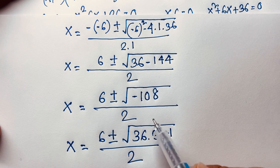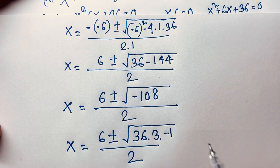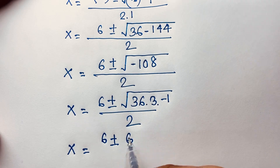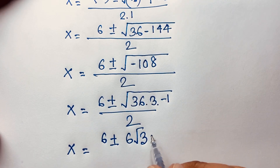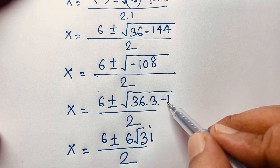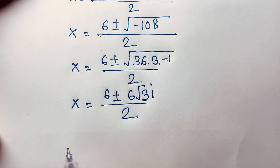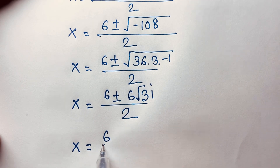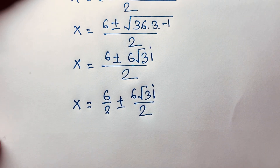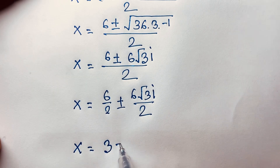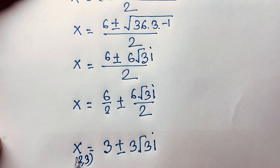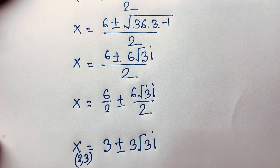Simplifying √(-108) = √(36 × 3 × (-1)) = 6√3 · i. So x = (6 ± 6√3 i) / 2, which gives x = 3 ± 3√3 i. Therefore x₂ = 3 + 3√3 i and x₃ = 3 - 3√3 i.